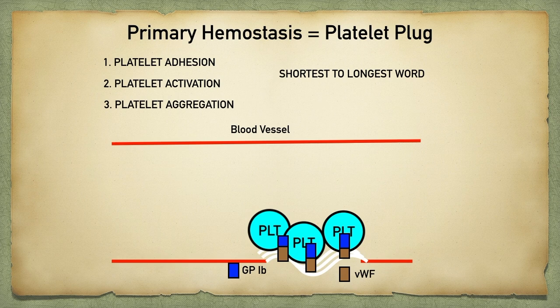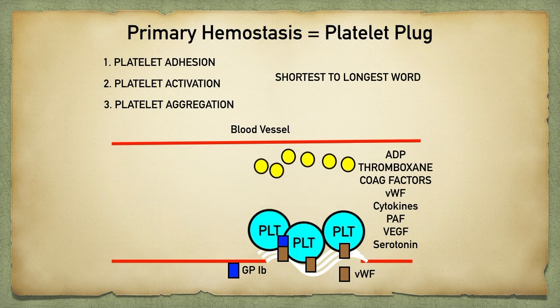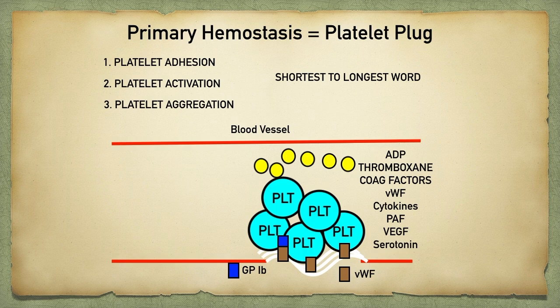Now let's talk about platelet activation. The interaction between von Willebrand factor and glycoprotein 1b will activate the platelets to release their contents into the intravascular space. Some of this content — including ADP and thromboxane — will bind to other platelets and activate them to recruit them to the site of injury. Thromboxane, in addition to serotonin, also serve as vasoconstrictors, binding to the vascular smooth muscle to allow contraction. Coagulation factors are also released during platelet activation, which will be important during secondary hemostasis and the coagulation cascade. VEGF is also released and helps promote angiogenesis.